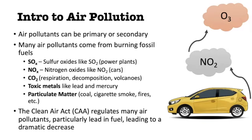Toxic metals can also be released mainly through combustion of coal. Those toxic metals include things like lead and mercury, which are both toxic to the nervous systems of organisms. Particulate matter, usually abbreviated as PM, can come from combustion as well — combustion of coal, cigarette smoke, combustion of wood through fires such as forest fires, and other sources.